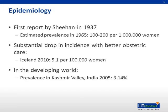In 1937, Sheehan first published a report describing pituitary necrosis at the time of autopsy in women who died from obstetric hemorrhage. Subsequently, in 1965, he estimated the prevalence of the syndrome to be 100 to 200 per 1 million women.